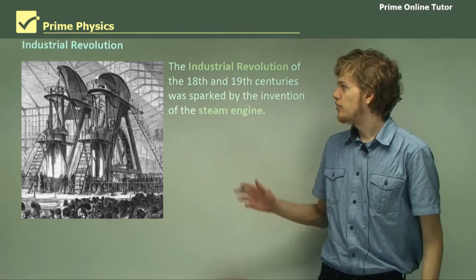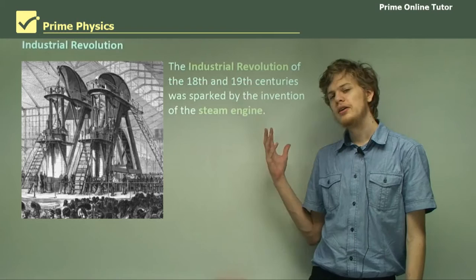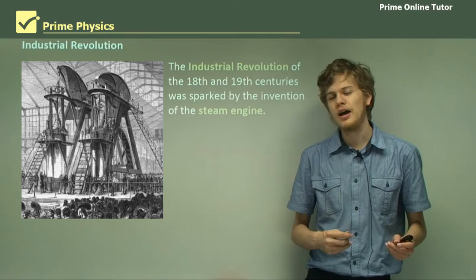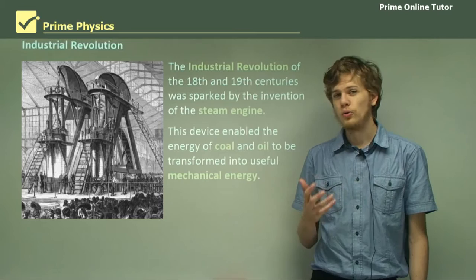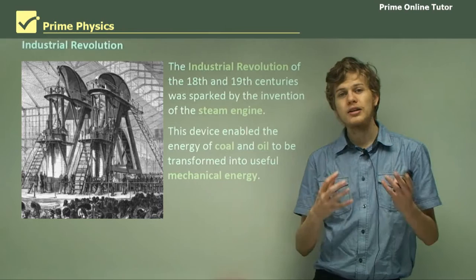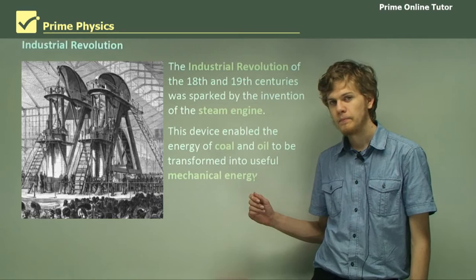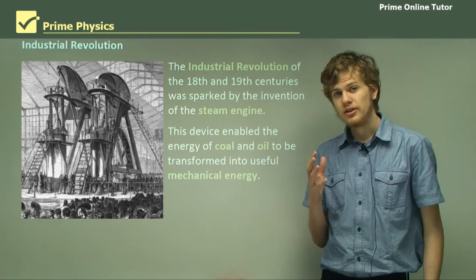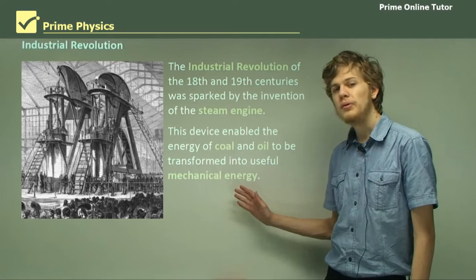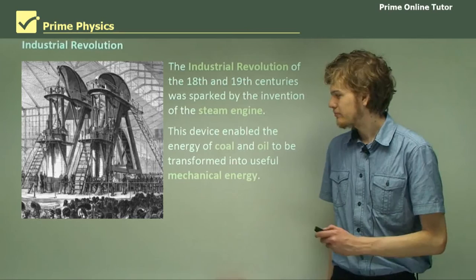As we've learned already, the Industrial Revolution, which occurred over the 18th and 19th centuries, was sparked by the invention of the steam engine. This is a device that could get mechanical energy out of chemical energy. The device enabled the energy of coal and oil — that is the energy when they're burned — to be converted into heat energy. The heat energy would heat up water and produce steam, which would then turn a piston or a turbine, leading to mechanical energy. So in all, what a steam engine does is it turns the chemical energy of coal and oil into mechanical energy, or kinetic energy, which is far more useful.